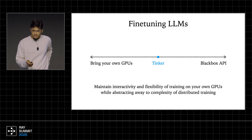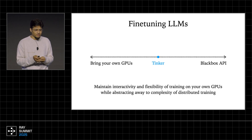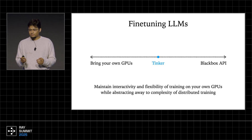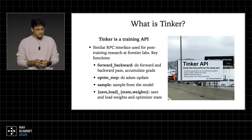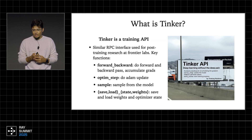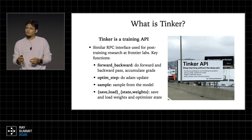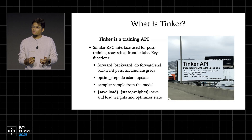What we are trying to do with Tinker is find a sweet spot in the middle, where you maintain the interactivity and flexibility of training on your own GPUs while abstracting away the complexity of distributed training. Tinker is basically a training API designed to have atomic functions like forward-backward, optimizer step, sample, save, and load state and weights. The key idea is that we wanted an interface very similar to what researchers use within model training labs — you can use these functions to design your own training loop, your own data, your own environments, your own algorithms.